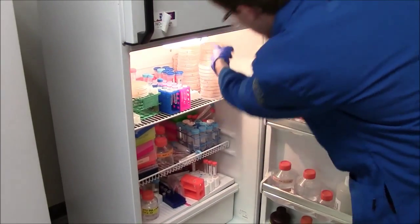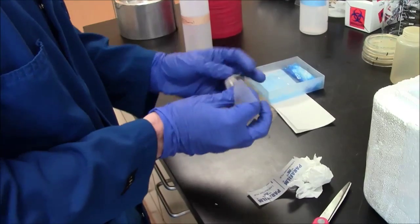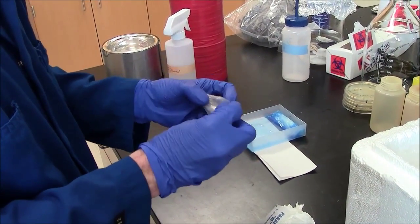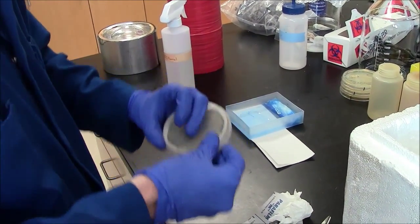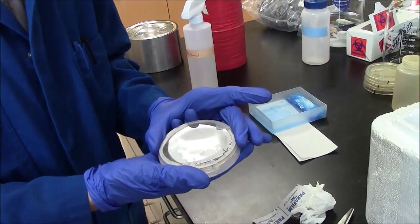The plates you'll use will either be freshly grown or stored in the refrigerator. If they are stored in the refrigerator, they should be wrapped with parafilm as shown here. Wrapping with parafilm helps prevent evaporation and also keeps the two halves of the plate together.